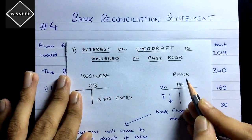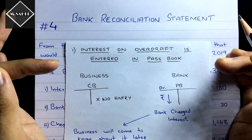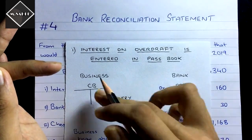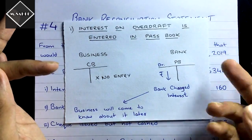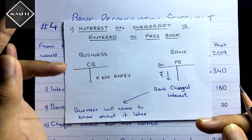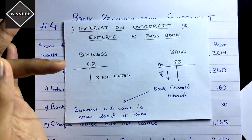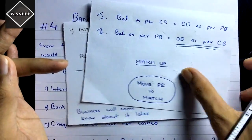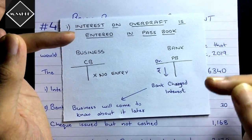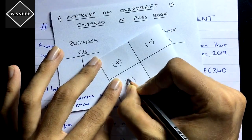The first transaction: interest on overdraft is entered in the passbook. The bank charged some interest on overdraft. Thinking about favorable balance — when the interest is charged, the bank balance according to the passbook is reduced, but the business doesn't know that interest has been charged; they will come to know only when they see the bank statement. So no entry has been made in the cash book. To match up, we can only move the passbook finger, so we are going to increase the passbook. This transaction will be added.